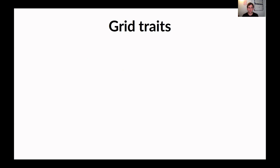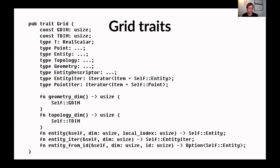I'm going to focus more on our grid traits, because this is where we've been spending a lot of time working. A grid, in our way of thinking about it, is a mesh of triangular or quadrilateral cells, or perhaps interval cells if you're doing a one-dimensional mesh. Typically we have grids of triangles or quadrilaterals that are two-dimensional surfaces embedded in 3D space — imagine a sphere with triangles drawn on its surface.